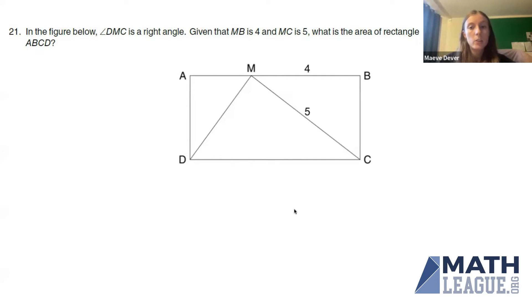There's two ways to do this. MBC is a right triangle because this is a rectangle, so angle B is a right angle. We can use the Pythagorean theorem. MC squared equals MB squared plus BC squared. So BC squared is 5 squared minus 4 squared. We got to do some math now: 25 minus 16, which is 9.